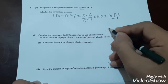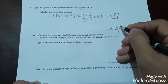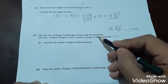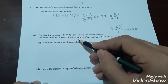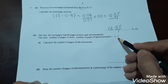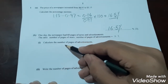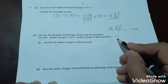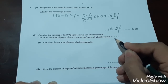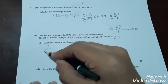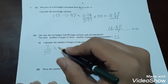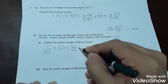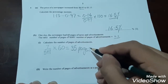So we will write 16.5% as our final answer. Question 1b states: one day the newspaper has 60 pages of news and advertisements. The ratio of number of pages of news to the number of pages of advertisements is equal to 5 to 7. In part i, calculate the number of pages of advertisements. So we will take the advertisements ratio which is 7, divided by total ratio which is 5 plus 7, multiplied by the total number of pages which is 60. This gives us 35 pages of advertisements.